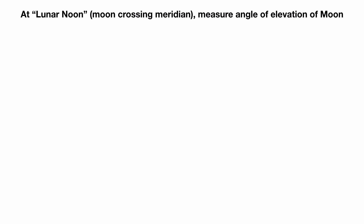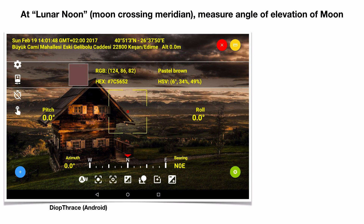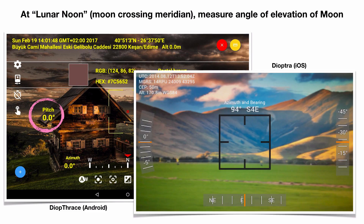The phrase 'lunar noon' is informal — really it's when the moon crosses the meridian, or when the moon is highest in your local sky. You're going to measure the angle of elevation of the moon using a cell phone app such as Diopthrace for Android or Dioptera on iOS. You want an app where you can take a picture and it tells you how high or down your camera is tilted.